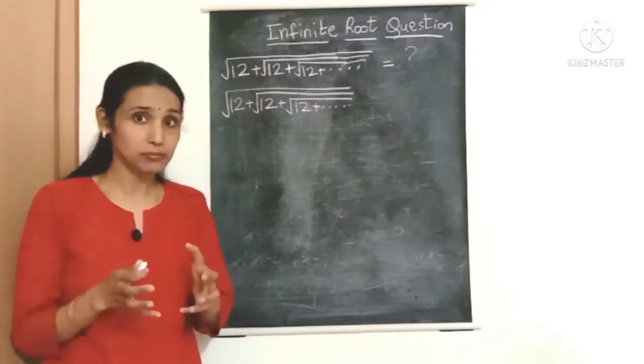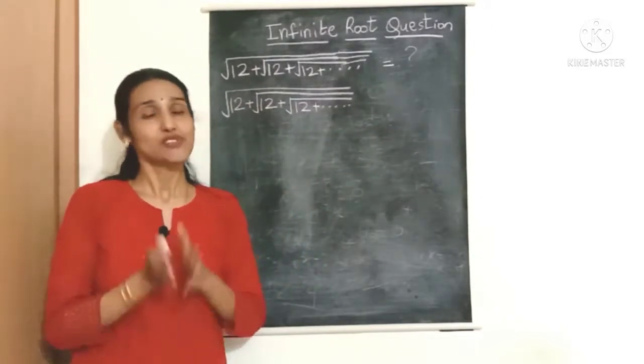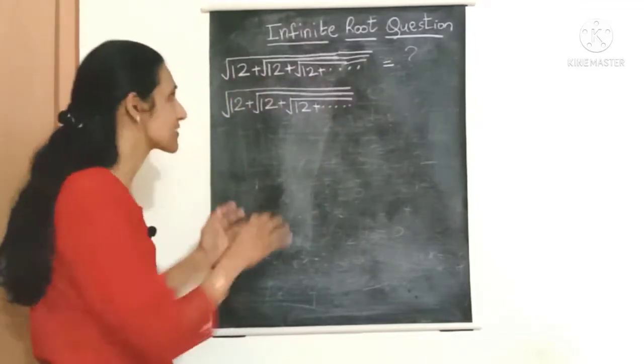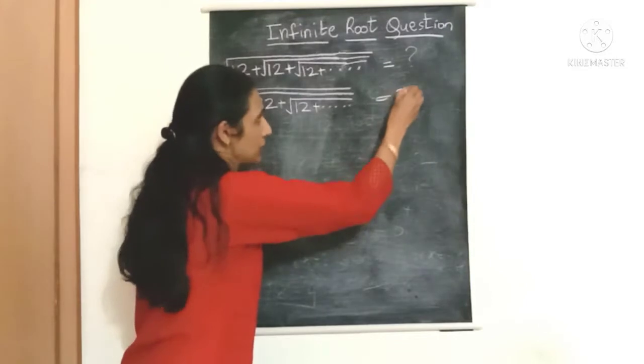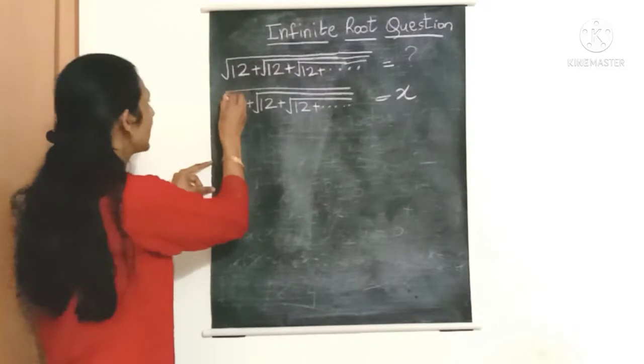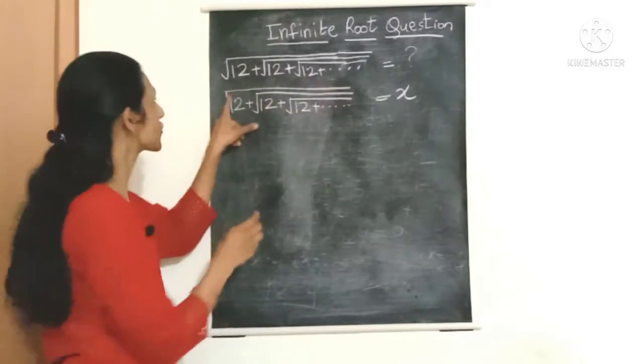First, let's call this entire expression as x or y or any variable. Now, you can't proceed much until we get rid of this outermost square root sign over here.